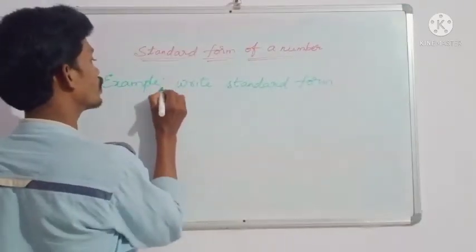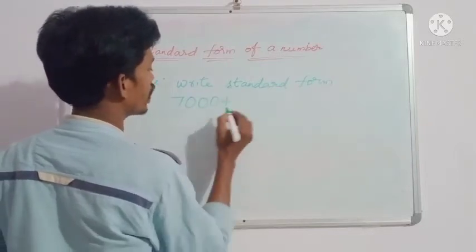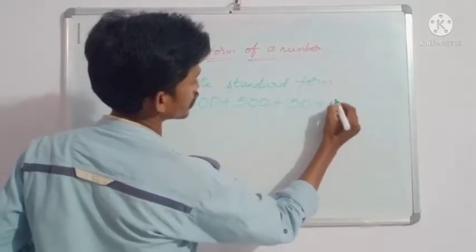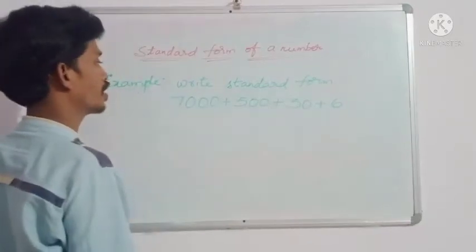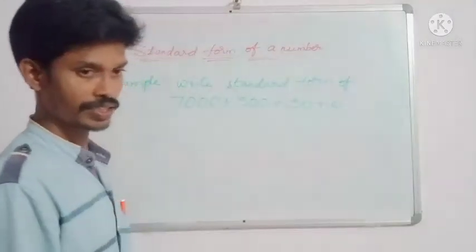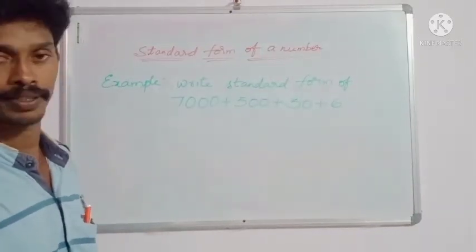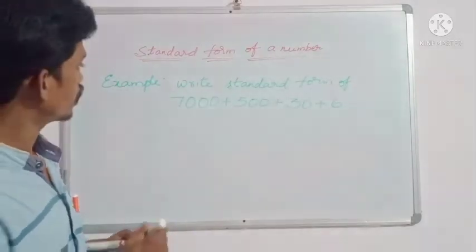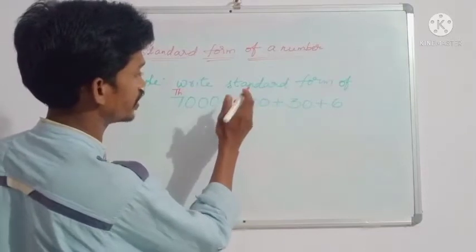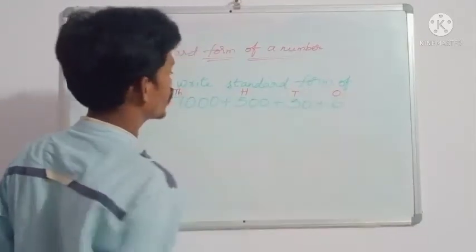Write the standard form of 7000 plus 500 plus 30 plus 6. While you are writing standard form of a number, first of all you have to find the places: ones, tens, hundreds, thousands.